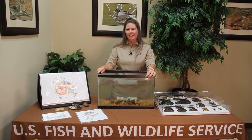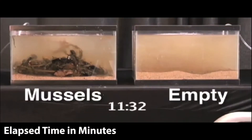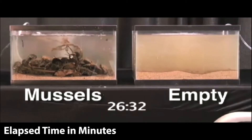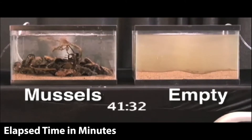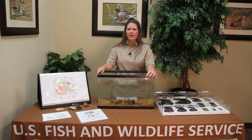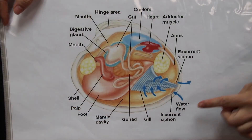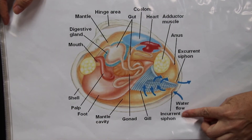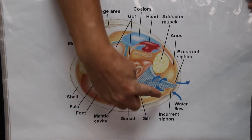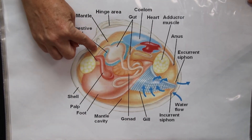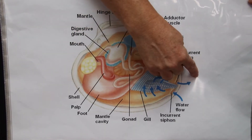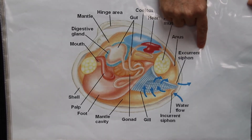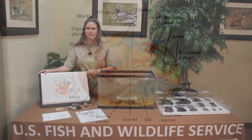So what do mussels eat? Mussels are filter feeders and that's a reason why we call them the livers of the river. Most consume a variety of microscopic particles suspended in the water column. These include things like algae, bacteria, and organic particles. They feed by taking water in through the incurrent siphon and passing it over their mucus-covered gills where small food items are collected and transferred to the mouth. Waste particles are flushed out through the excurrent siphon, and by filtering out suspended particles including impurities, mussels improve water quality and clean lakes and streams.